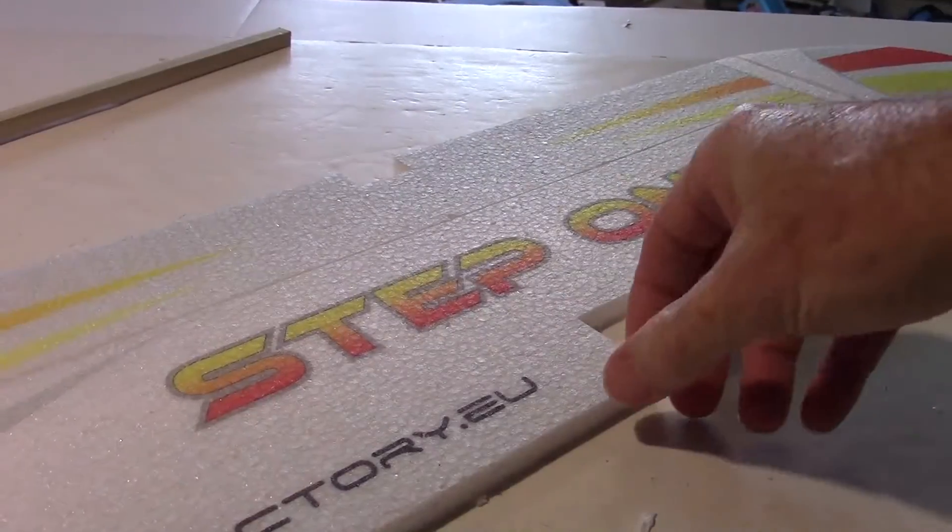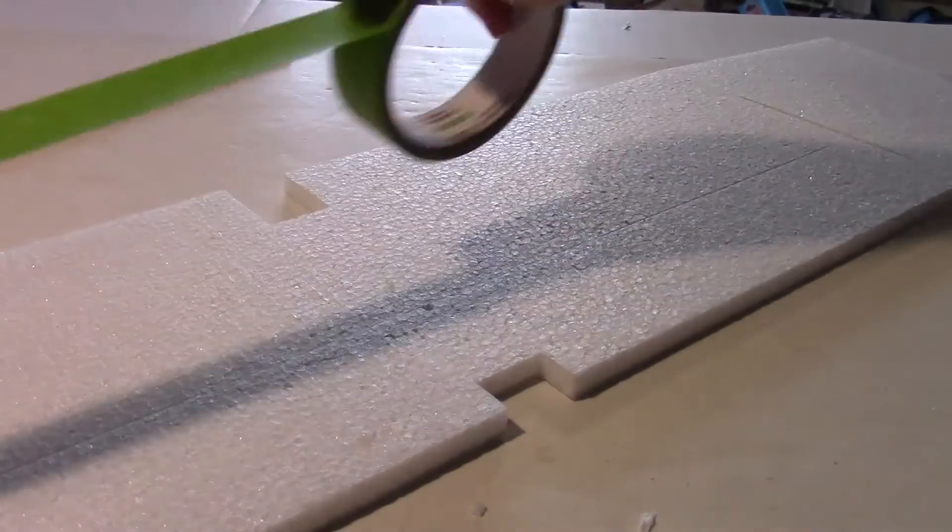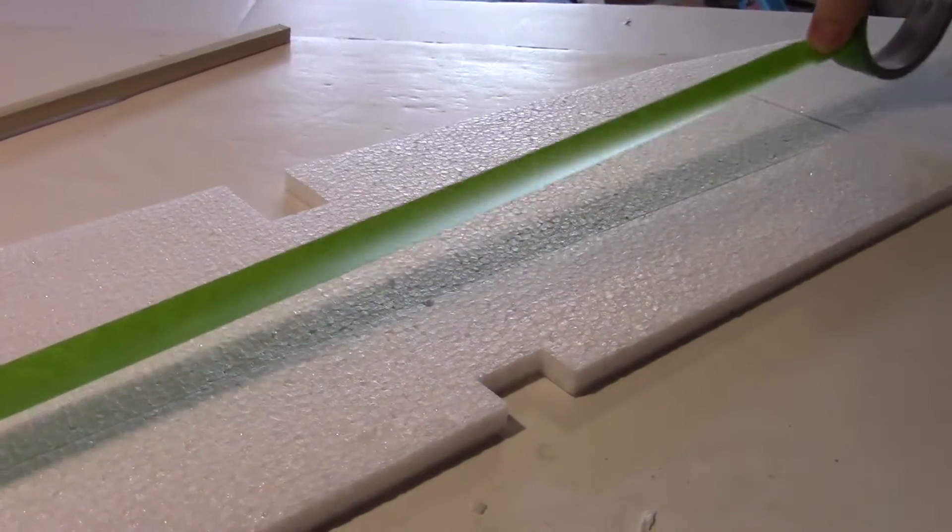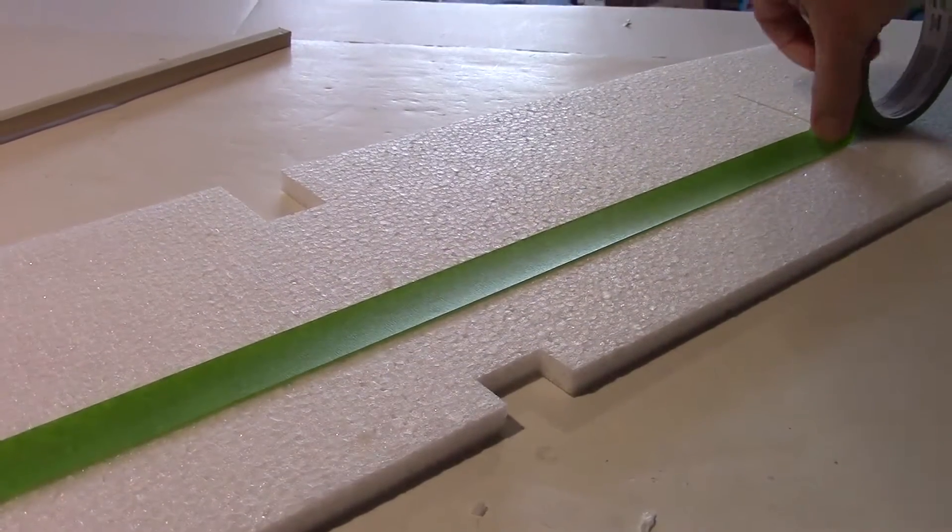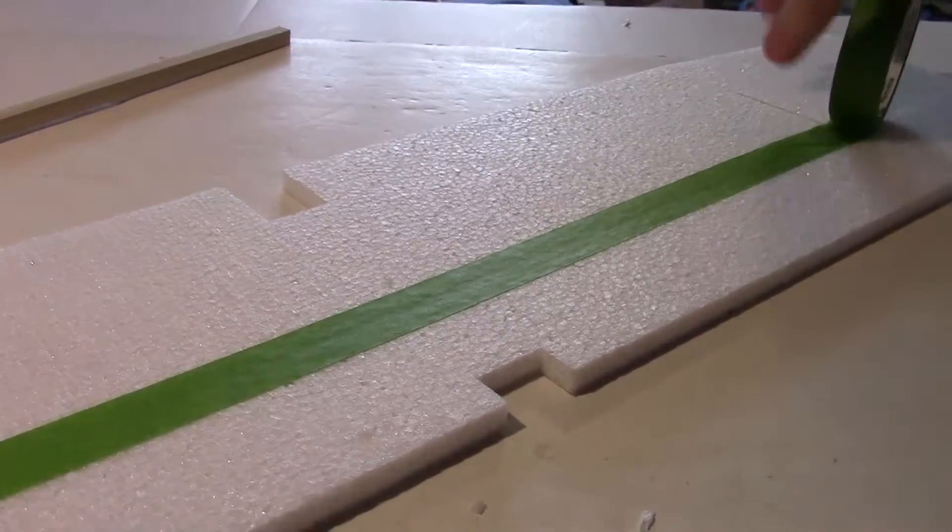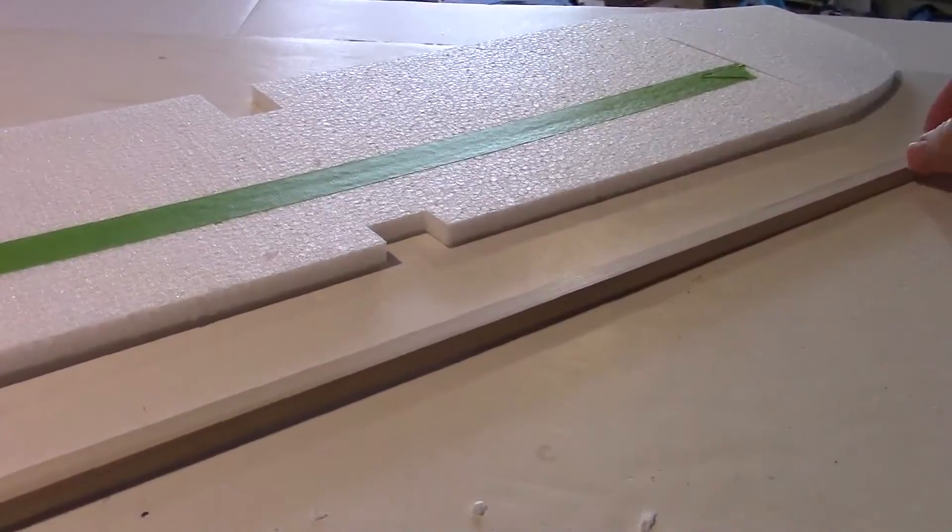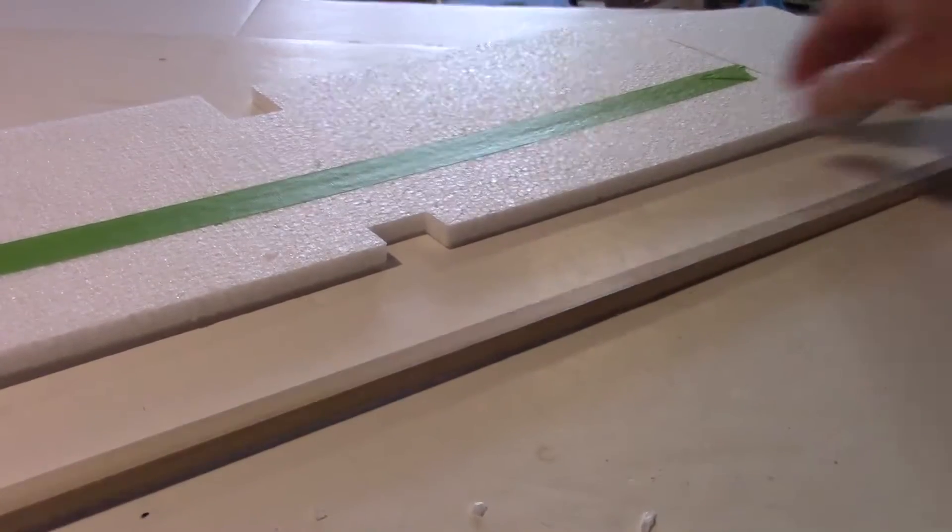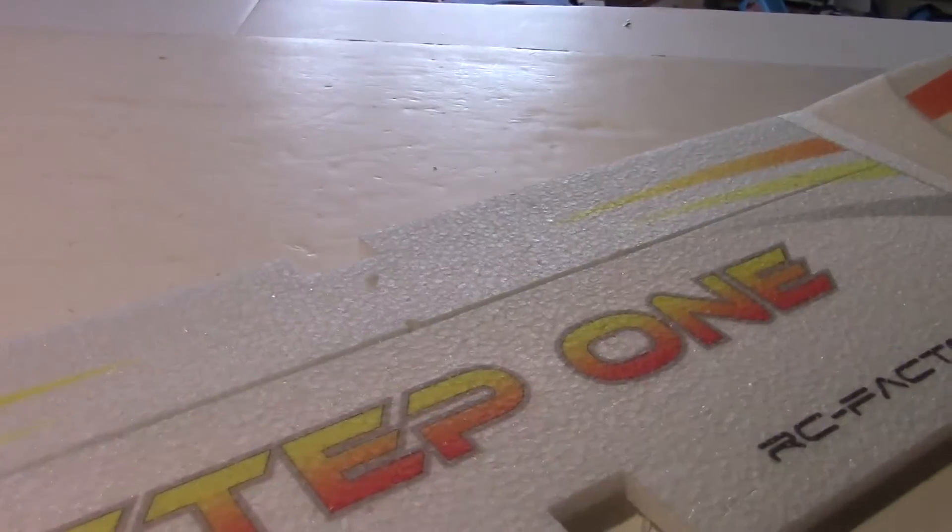Next flip the wing over and apply masking tape to the bottom. I'm just putting some masking tape over the crack where the wedge spar is going. Now just put a scrap piece of wood down on the table and flip the wing back over with the groove on top of that piece of wood.